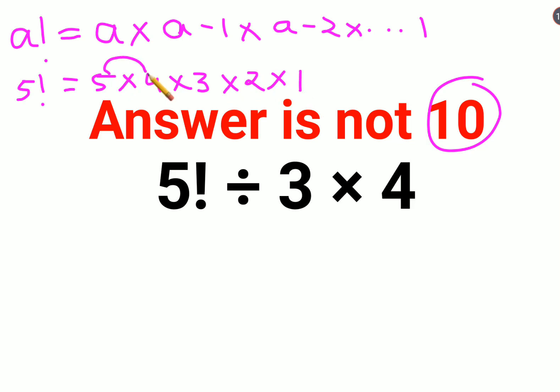And that would be 5 into 4 is 20, into 3 is 60, into 2 is 120. So basically your question has now changed to 120 divided by 3 into 4.